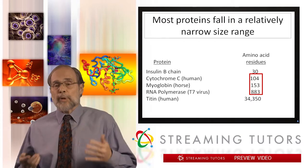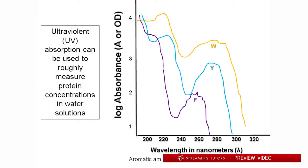Let's deal with the bulk protein measurement first. One really easy way to do this is with UV absorbance. The wavelengths of light we're going to be working with here are in the ultraviolet — too short for us to see. In the visible spectrum, where you and I see, proteins absorb not at all; they're colorless. But they are extremely colored in the UV spectrum. This diagram shows the absorbance of ultraviolet light by three different amino acids.